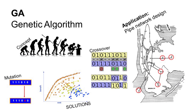GA proudly represents the group of evolutionary algorithms. Stealing the idea from natural selection, it reproduces and mutates solutions through numerous iterative processes that eventually lead to otherwise unreachable results. It has a wide range of application and is especially useful with pipe networks.